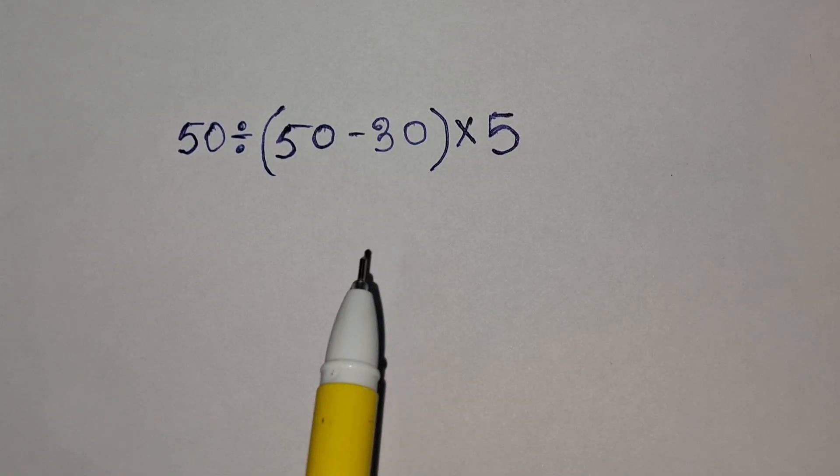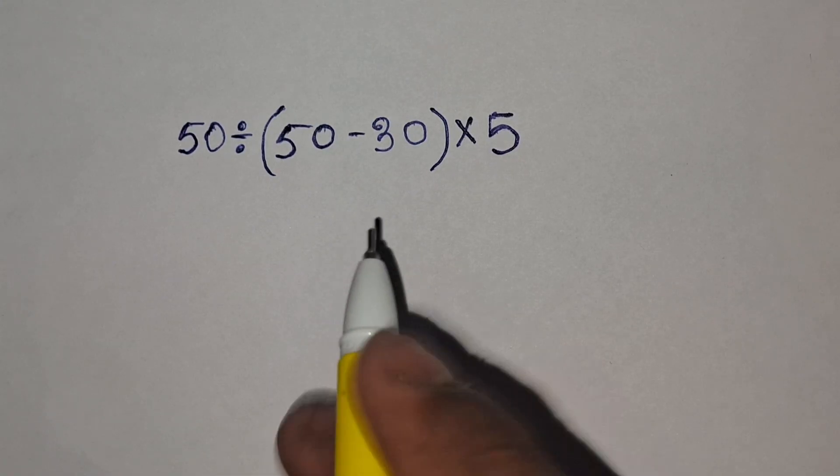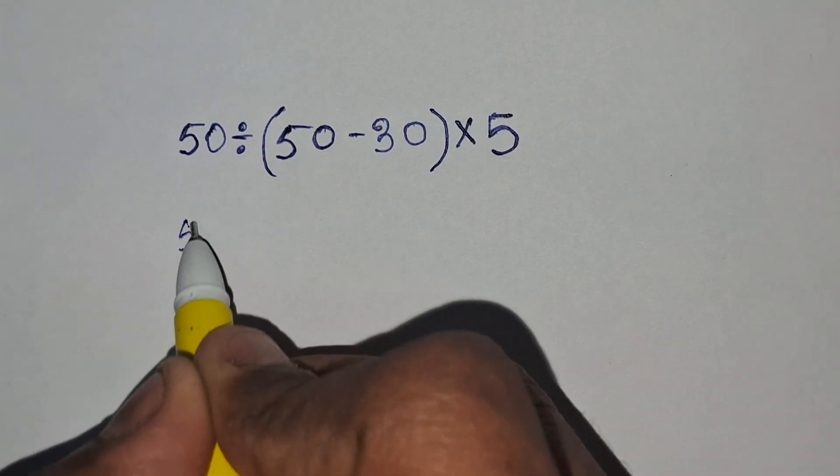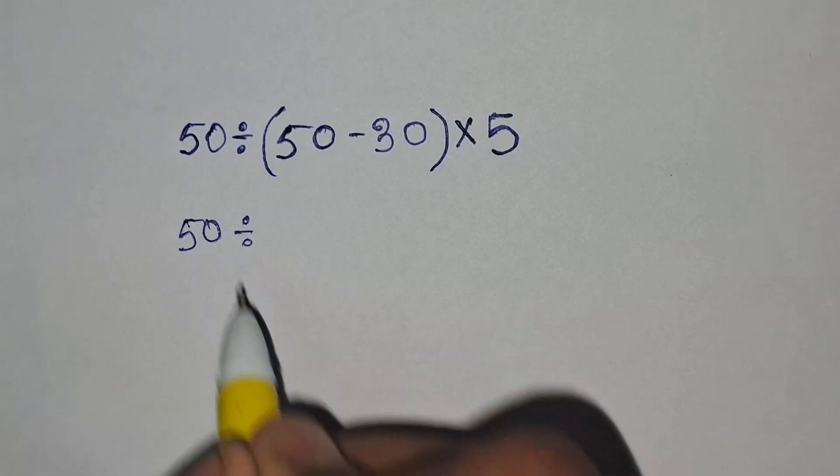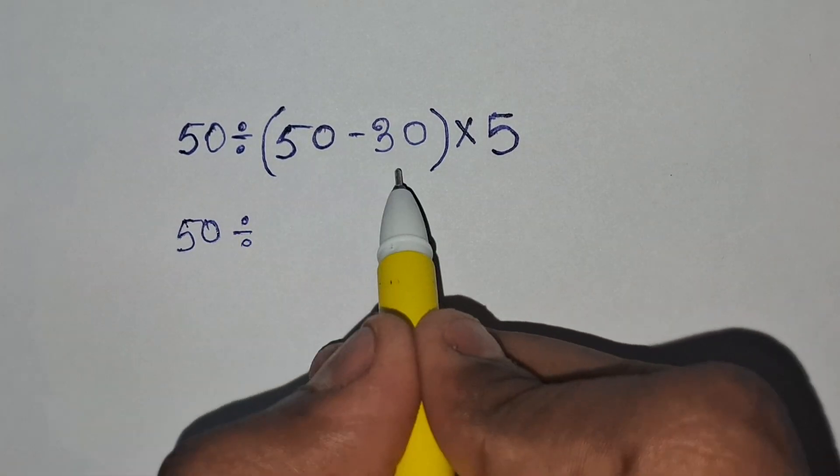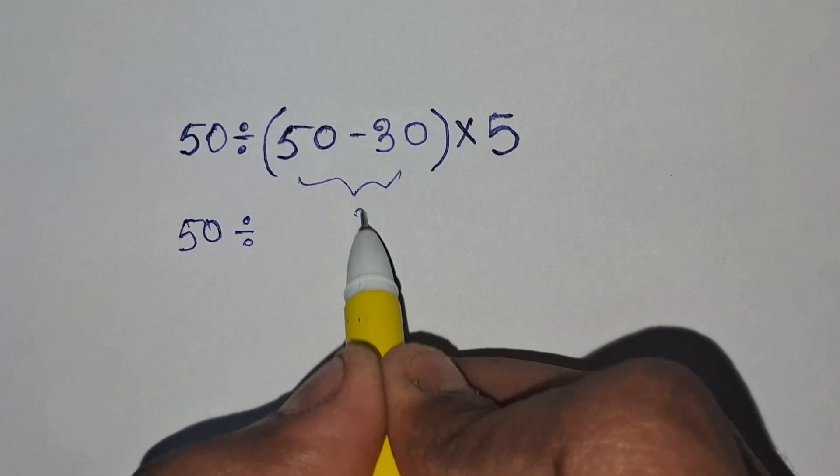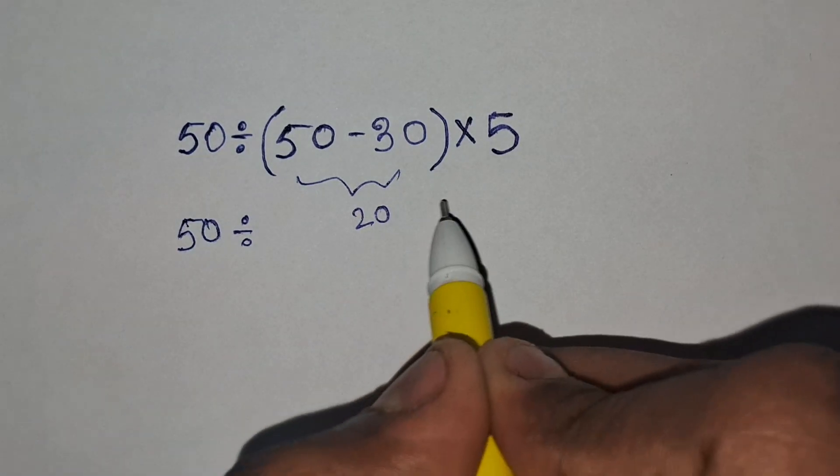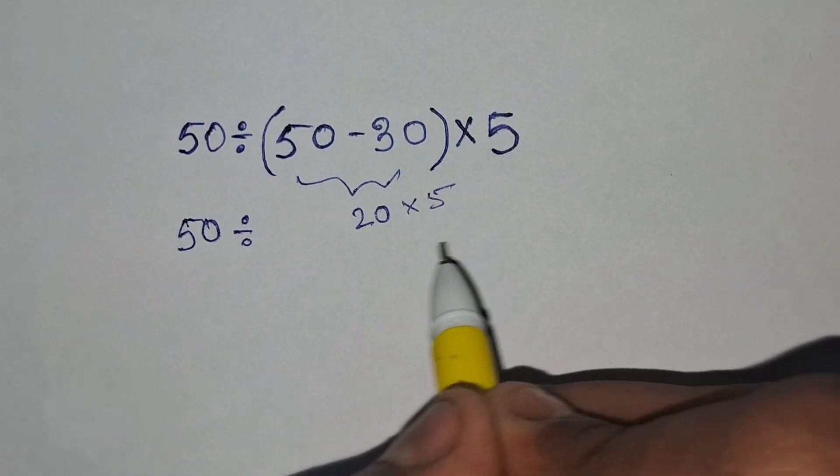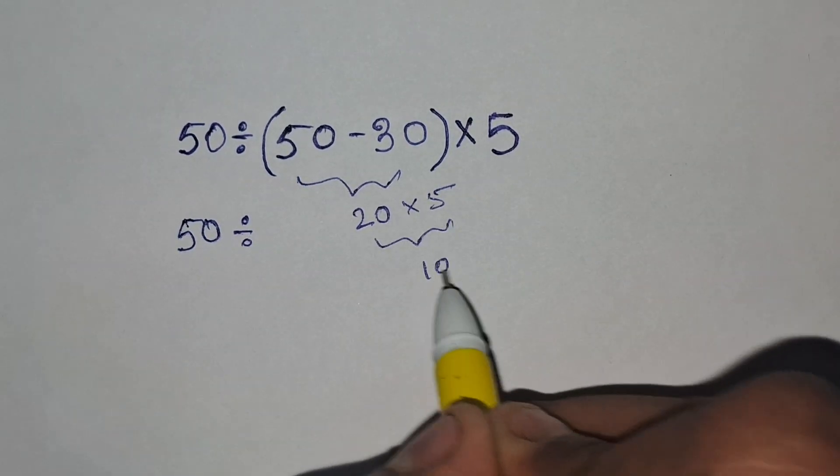Let's go ahead and try to find the value of this expression. 50 divided by 50 minus 30 equals 20, and it is multiplied by 5. So 20 times 5 equals 100.